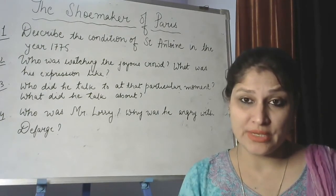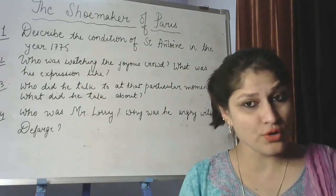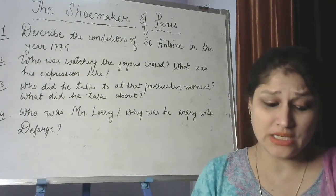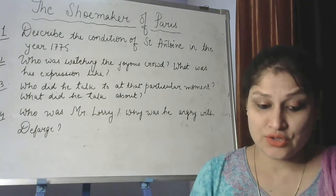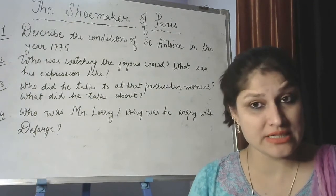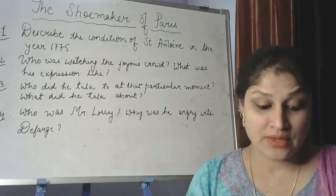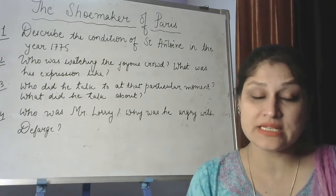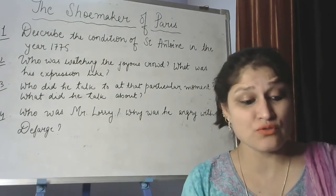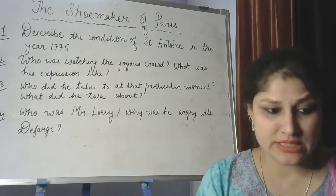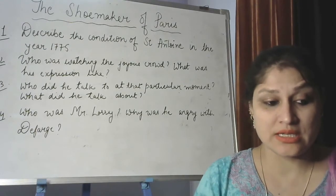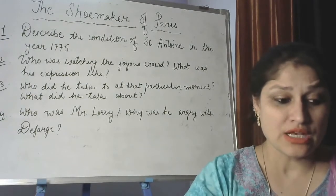When you write this answer, make sure you get the points from the first paragraph of your chapter, on page number five. The answer should be: in the year 1775, Paris, the capital of France, was a great and rich city, but some parts of the city were very poor. The poorest district of all was Saint Antoine, where the people lived in great poverty — they were hungry, ragged, and desperate. Misery hung like a black cloud over Saint Antoine.